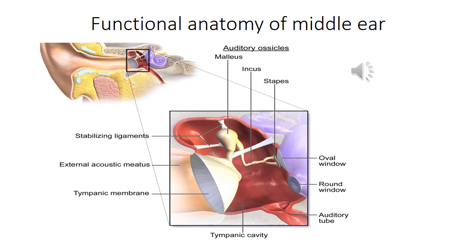It's a bony tympanic cavity, rectangular in shape, and air-filled compartment inside the temporal bone. It's just a kind of box containing four walls, a floor, and a roof. The outer surface which connects to the environment is the tympanic membrane, or eardrum — a thin, elastic, semi-transparent, conical membrane.